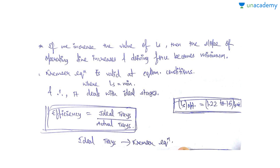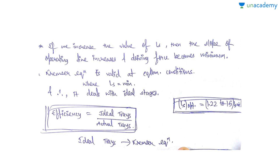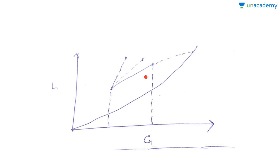Now for Case 2: if we increase the value of LS. The operating line has a slope of L/G. You might think that increasing the solvent flow rate would make separation easier, but that is not the case — increasing the solvent flow rate causes changes that actually decrease its effect.